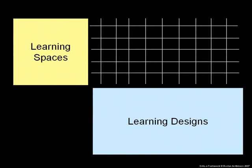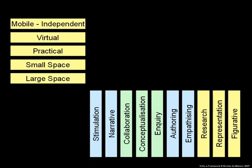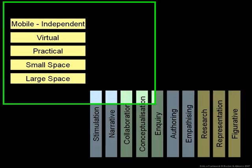We've been developing this as a matrix in workshops using a paper-based tool such as the one illustrated here. You can see that we have a matrix that consists of two axes: learning spaces and specific learning designs. The learning spaces consist of mobile, independent, virtual, practical or laboratory space, small spaces and large spaces, and a range of learning designs that I'll come to in just a moment.